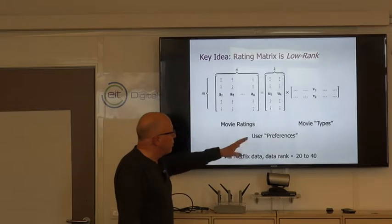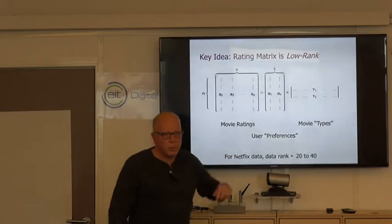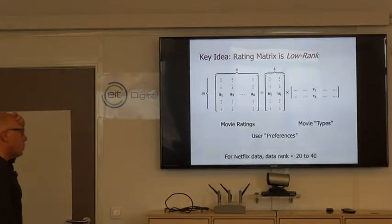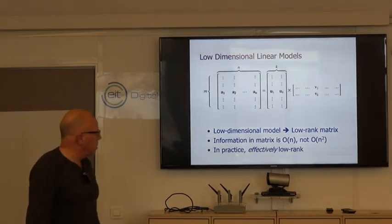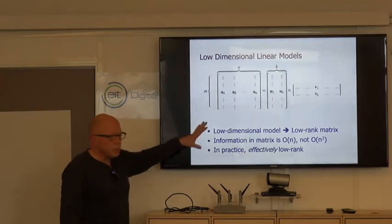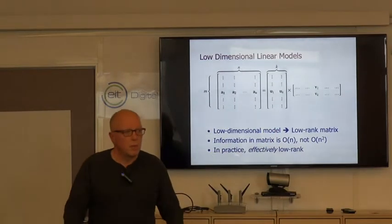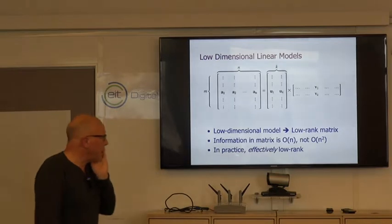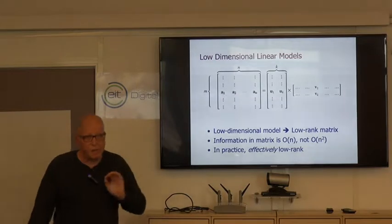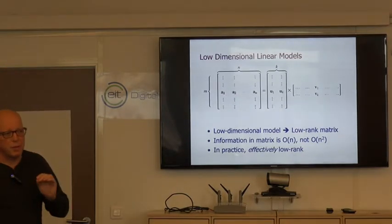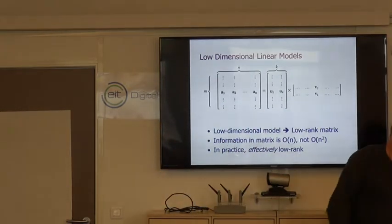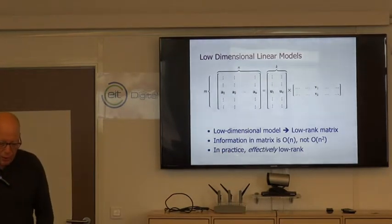Typically the solutions that worked well used ranks of 20 or 40. You can think of this as assigning each user a K dimensional vector which encodes their preferences and assigning each movie a K dimensional vector which describes the features of the movie. The important thing to realize is that if this matrix were to grow, typically we would not expect K to grow. So the information is really order N content, not N squared.